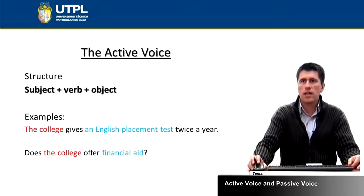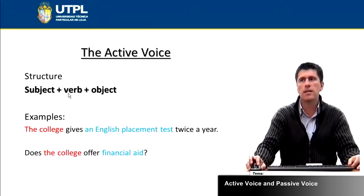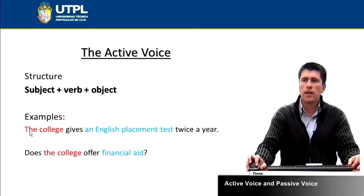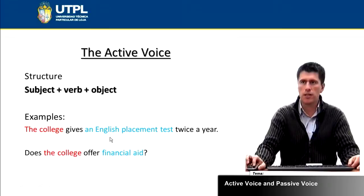It is important that you understand the structure of the active voice. As you can see, you're going to have the subject plus the verb plus the object. For example: 'The college gives an English placement test twice a year.' The college is the subject, gives is the verb, and an English placement test is the object.